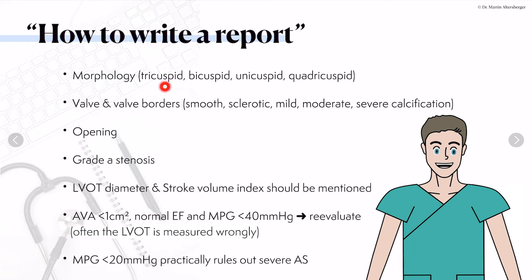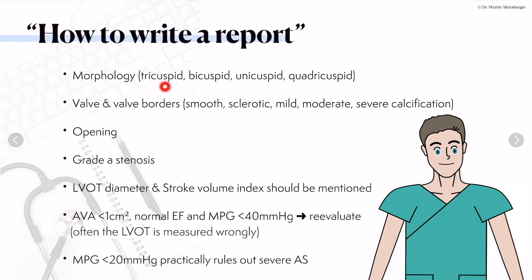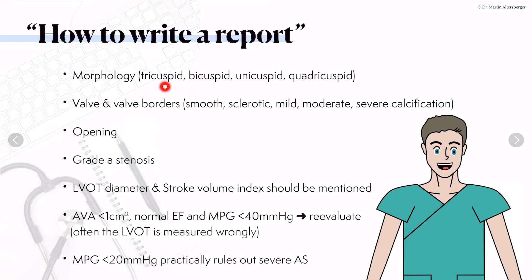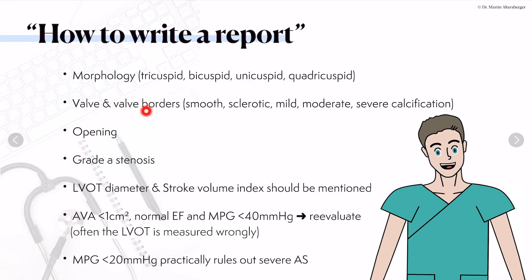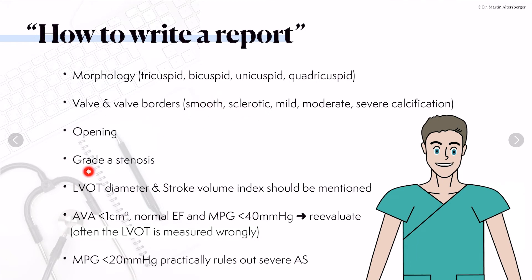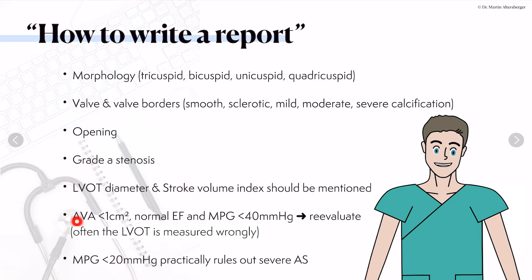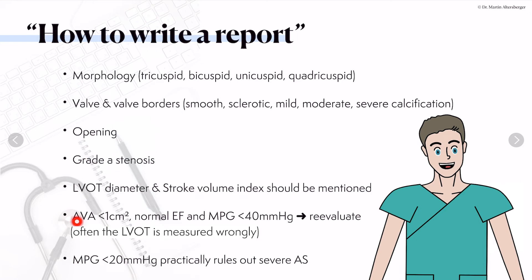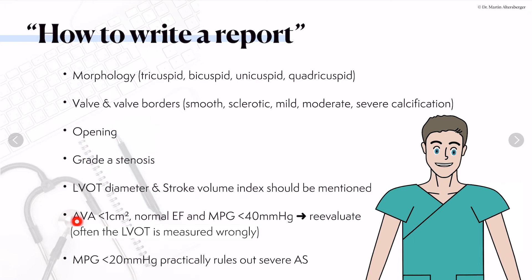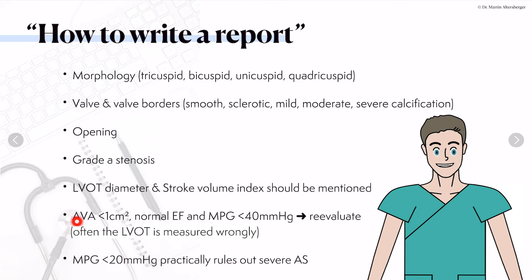Something very often asked is how to actually write a report. First, describe the valve with the morphological findings: is it tricuspid, bicuspid, unicuspid, or quadricuspid? Describe the valve borders — are they smooth, sclerotic, mildly, moderately, or severely calcified? Describe the opening: is it preserved or reduced? Measure the gradients and grade the stenosis. Also include the LVOT diameter and the stroke volume index in your report, so that others can see what you measured and use it as a reference.